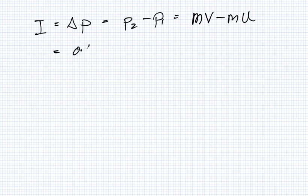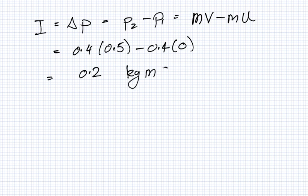So that is 0.4 times 0.5 minus 0.4, and it kicks it so it's at rest at the beginning. So that is 0.2, and the unit is kilogram meters per second.